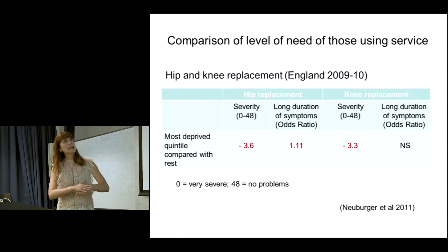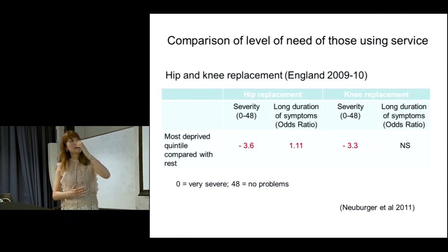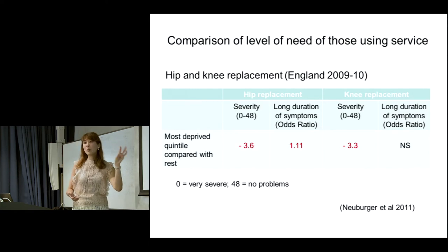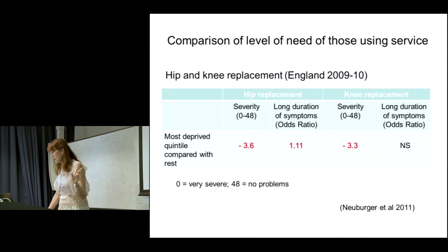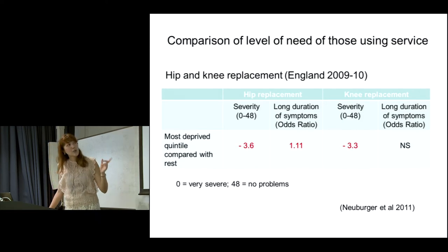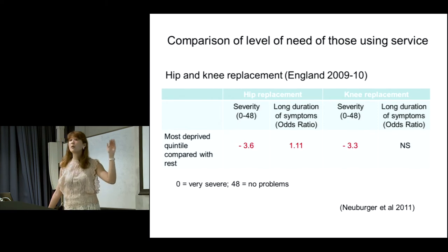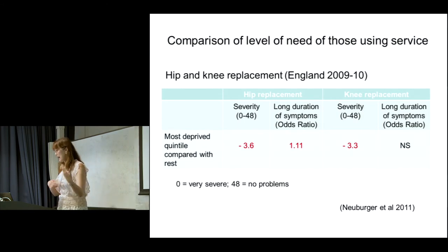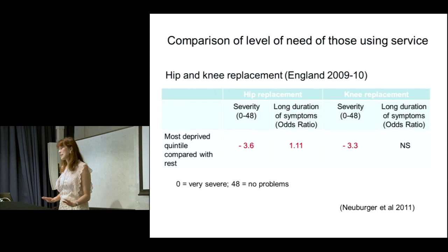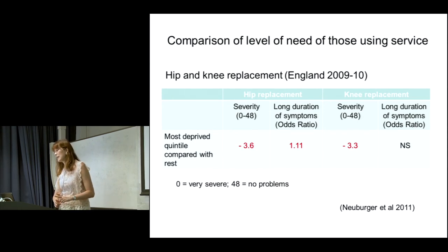This is also interesting — it comes from PROMs data. In England they collect patient-reported outcome measures for hip and knee replacement. They found that those in the most deprived 20% of the population have more severe symptoms — scoring 3.6 points lower on the severity scale — meaning they were in greater pain and had greater symptoms at the point when they had surgery. Also, the most deprived were 11% more likely to have a longer history of symptoms. And these differences are statistically significant.